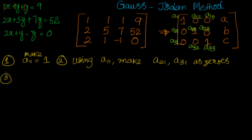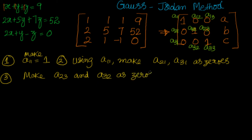After step 2, you have a11 as 1 and a21, a31 as 0. With those zeros in place, it becomes easier to create more zeros. In step 3, make a23 and a32 equal to 0. After that, you only need to get the value of a, so in step 4, make a12 and a13 equal to 0 using rows 2 and 3.